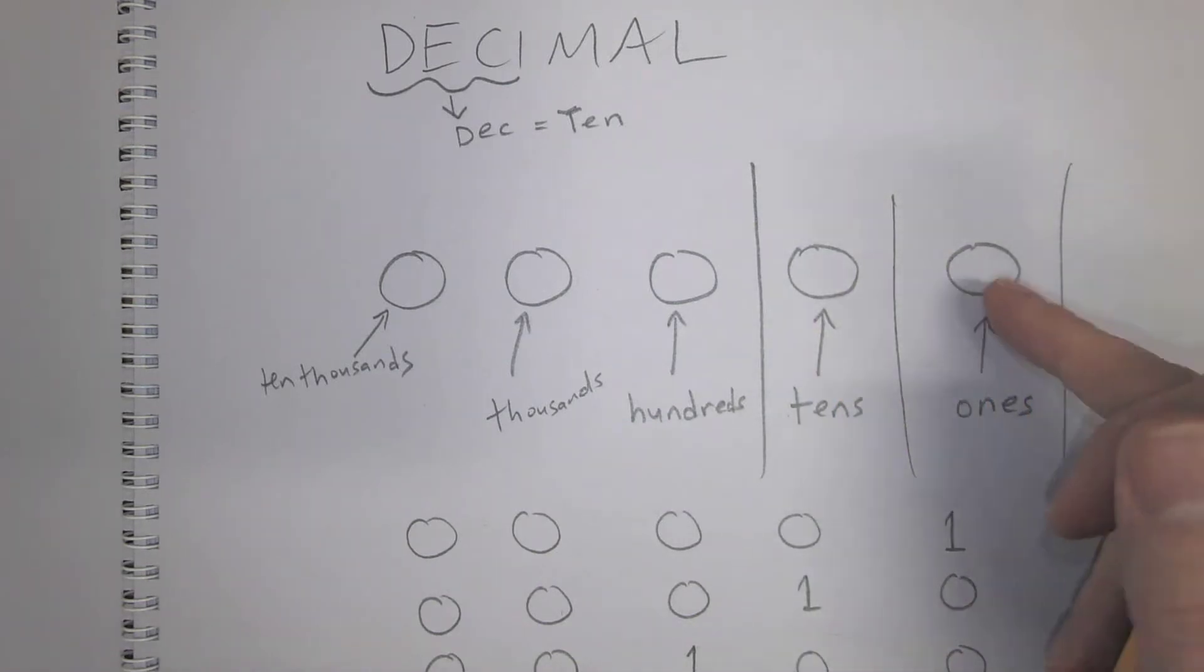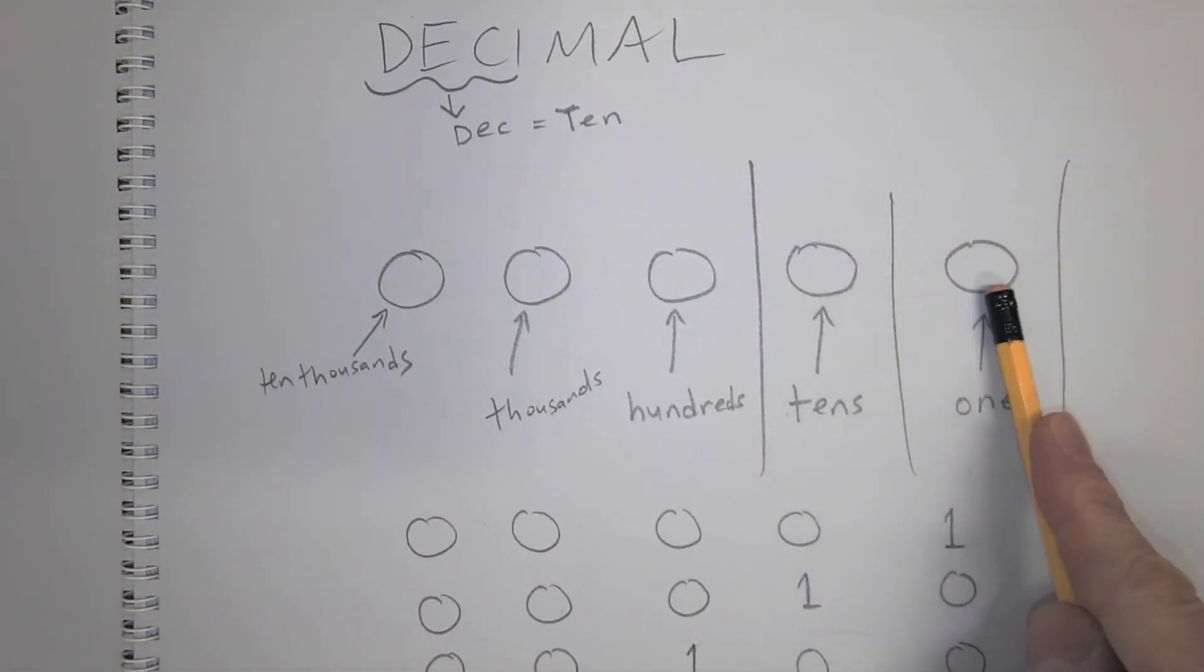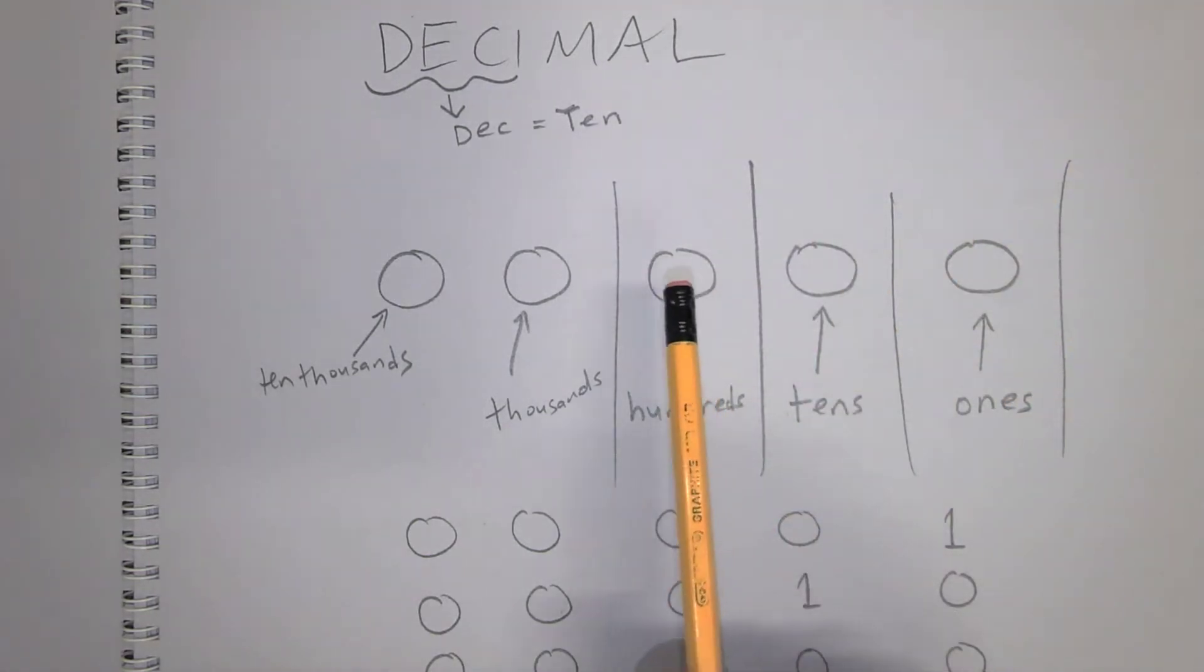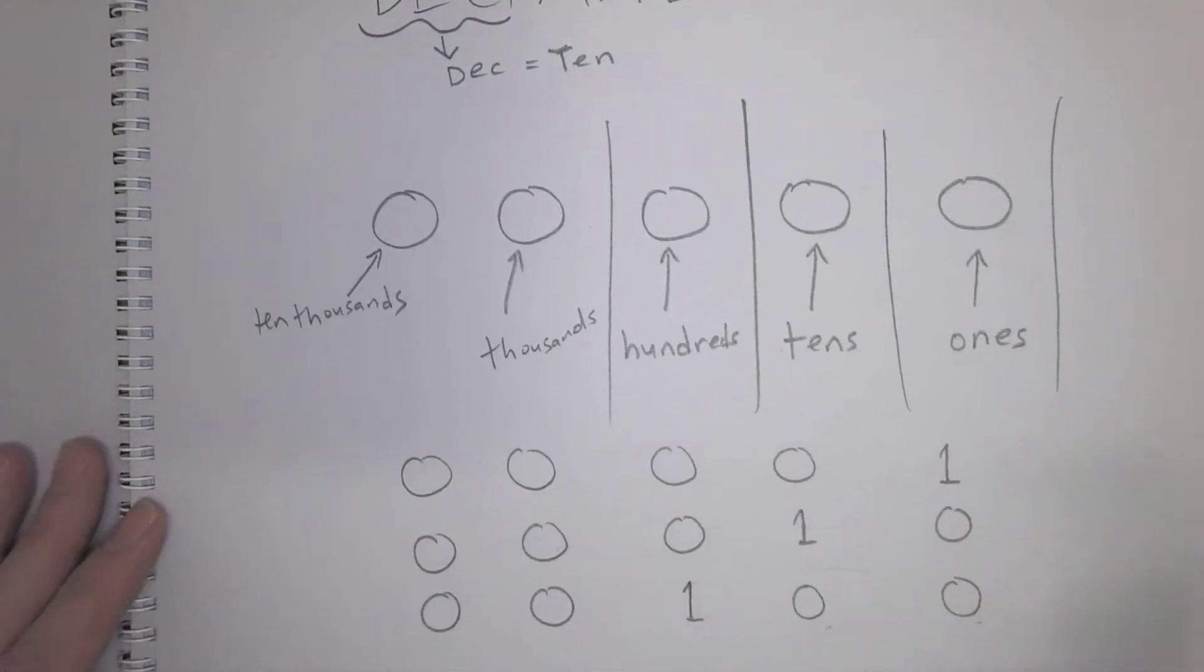And then when this becomes 9, 99, we've got no more room, we add 1 to the 100s, right? So that's how we count, we do it all the time, we don't even think about it.